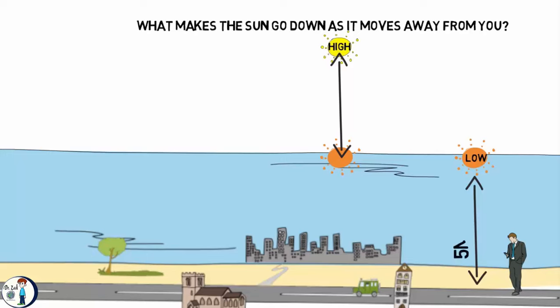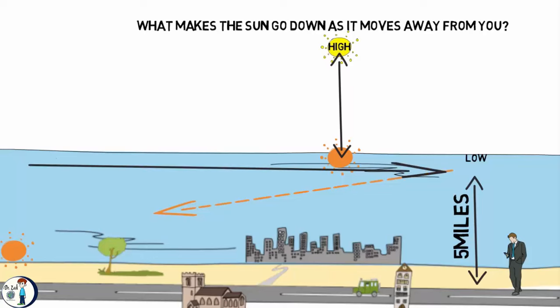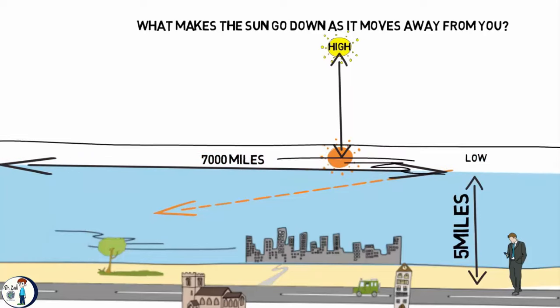If the atmosplane is only 5 miles up, and the apparent sun is right above it, then yes, perspective can make the sun go down in less than 7,000 miles away from the observer. And this will make the flat-earth model work. But you and I believe that the atmosplane or atmosphere is a lot thicker than that. Therefore, perspective would help a little, but not a lot.